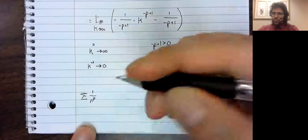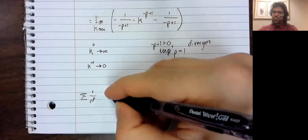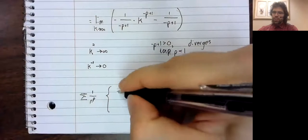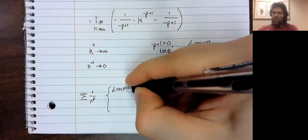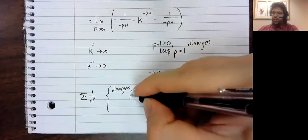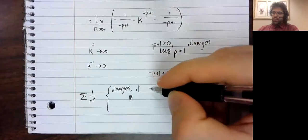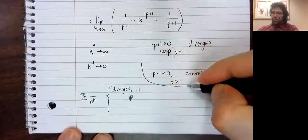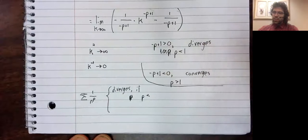So the P-series diverges if P is less than one.